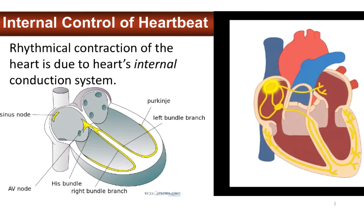The cardiac cycle, or heartbeat, is controlled in two general ways: internal control of heartbeat, which means it's intrinsic or internal to the heart itself, and then external control, which involves hormones and the nervous system.